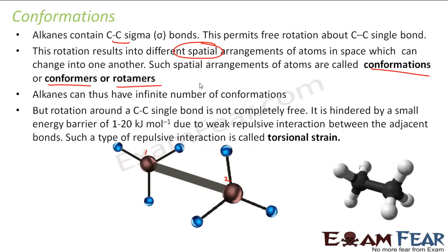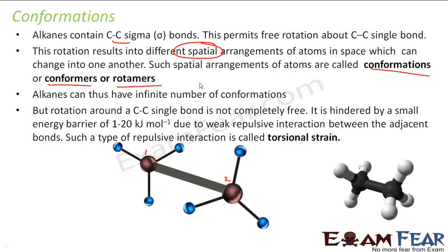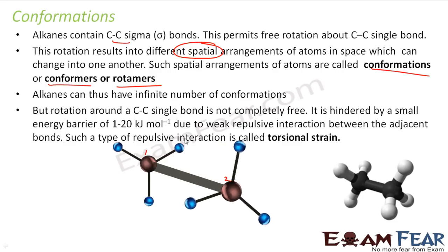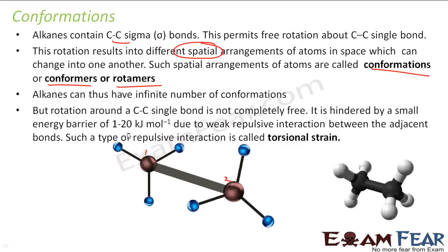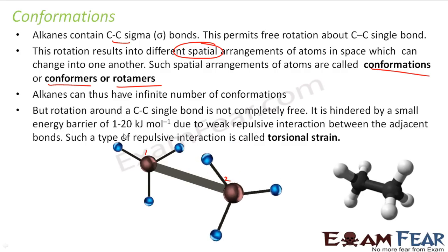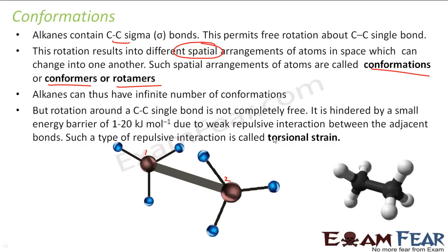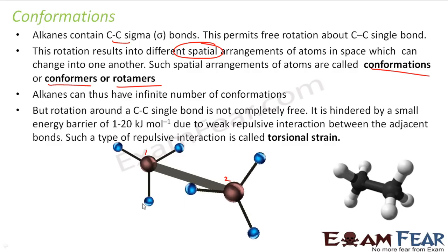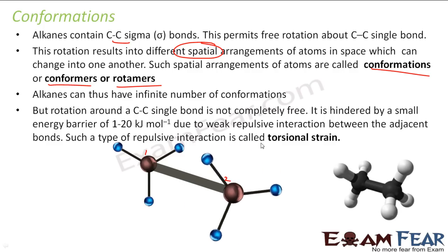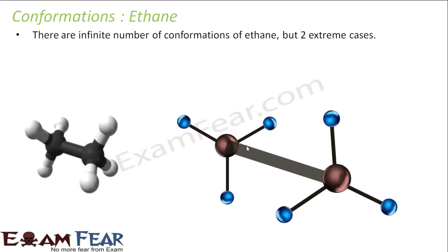Before we study the extreme cases, note that these rotations are not completely free — they are hindered by an energy barrier of about 12 kilojoules per mole. This is very weak and can easily be overcome, but there is some barrier, and this energy barrier is called torsional strain.